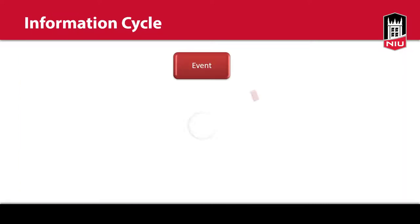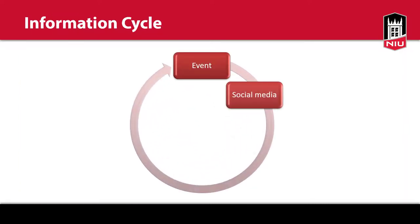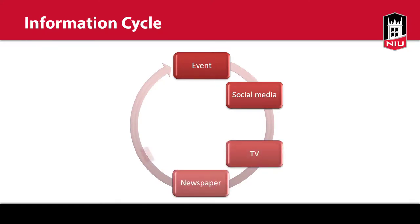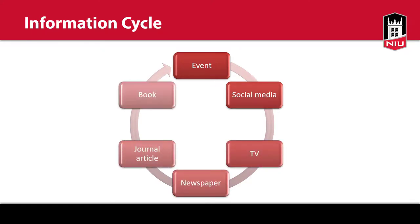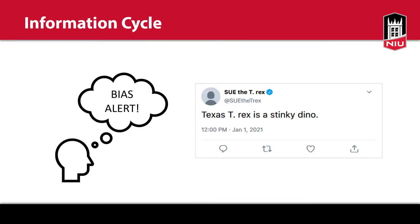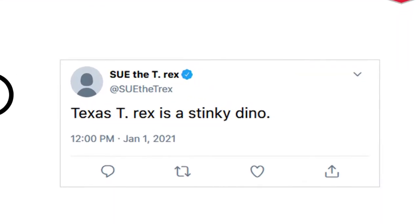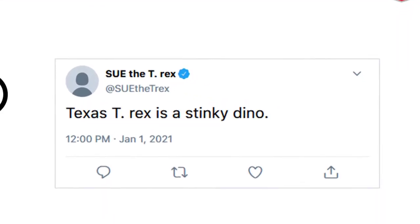The information cycle is useful to consider so that you know what type of information is available on a topic and what format is appropriate for your research need. Also remember that the format and where it is published can inform the purpose of the information or a specific bias.